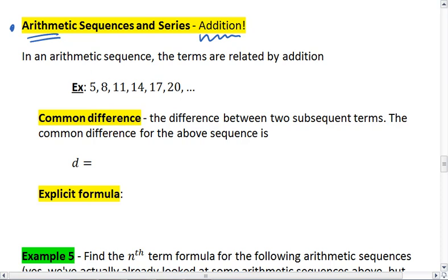Here we have 5, 8, 11, 14, 17, 20. It's a repeated addition of 3. This means that the common difference for the example above is 3. No matter what, we're adding 3 each time.